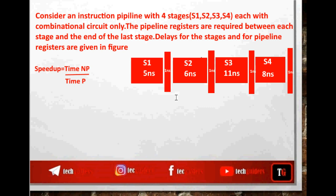Let n be the number of instructions to process. In the non-pipeline implementation, each instruction passes through each phase and we are not using intermediate buffers. Hence, the time taken for each individual instruction is 5 + 6 + 11 + 8, which is 30 nanoseconds. Since instructions are processed one by one, the time taken for n instructions is n × 30 nanoseconds.